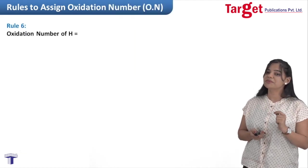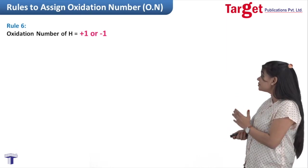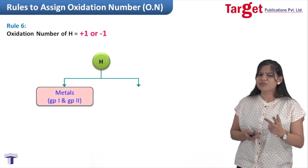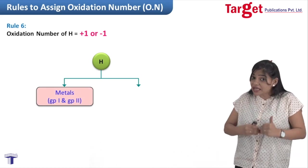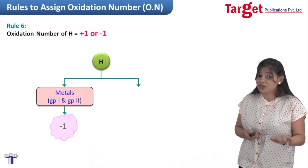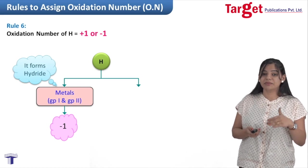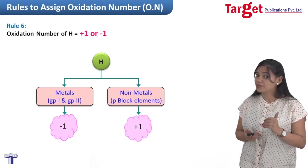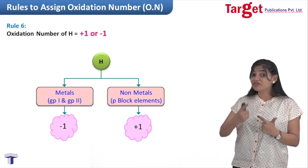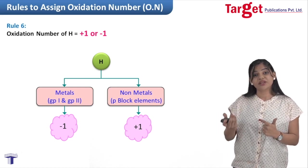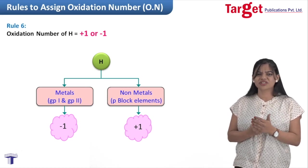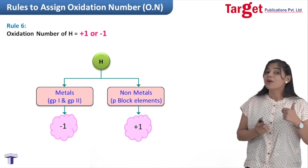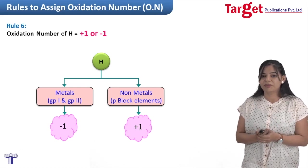Rule 6: oxidation number of hydrogen. This can be either −1 or +1. It is −1 whenever hydrogen combines with group 1 or group 2 elements, because hydrogen's electronegativity is greater than theirs, giving it a tendency to gain one electron. So hydrogen is −1 with alkali metals and alkaline earth metals. Whenever it combines with elements from the p block, d block, or blocks other than the s block, the oxidation state of hydrogen is +1.